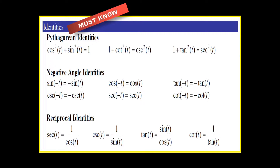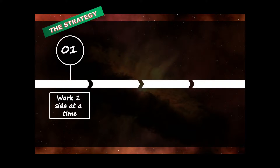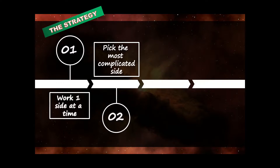After you have memorized the identities, the next thing is we must know the strategy. The very first important strategy is: work with one side at a time and manipulate it to the other side. Next, pick the most complicated side to work with. Our brain is not built to make things more complicated — we always try to find the simplest way. So always work on the complicated side and move slowly to the easier part.